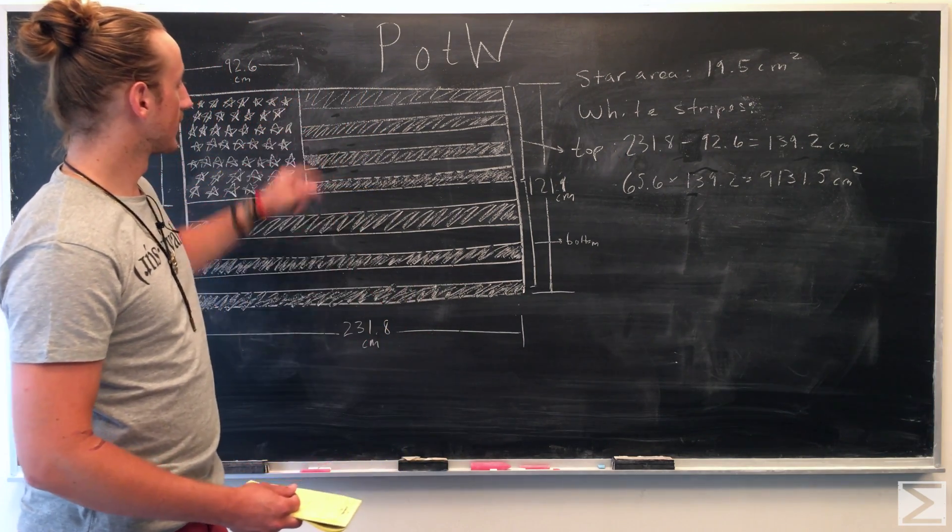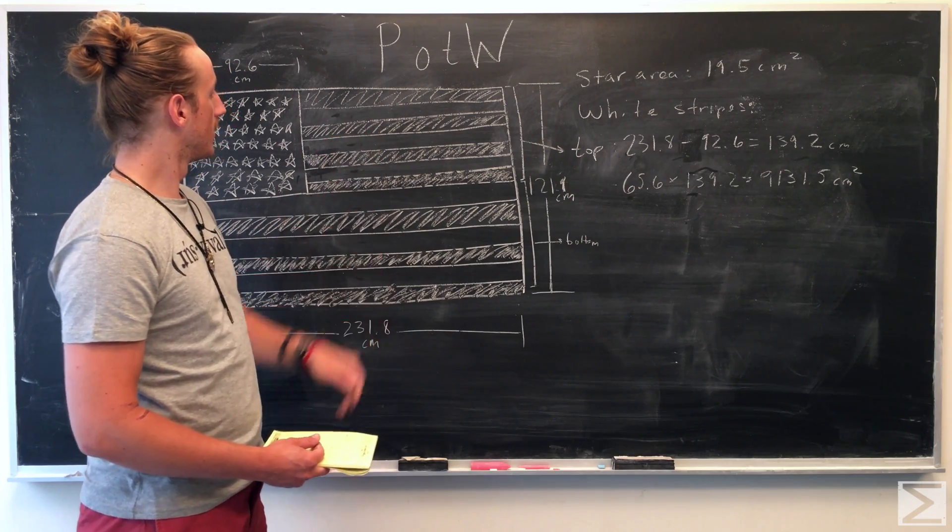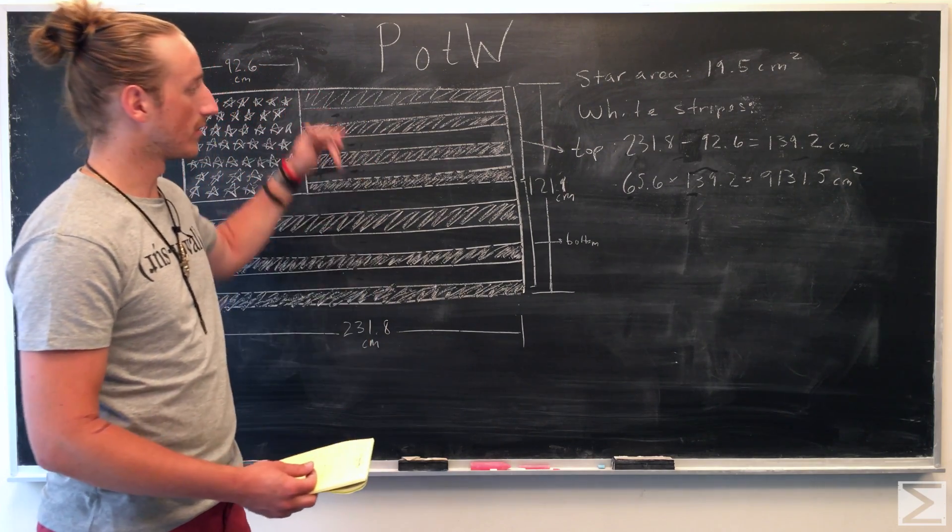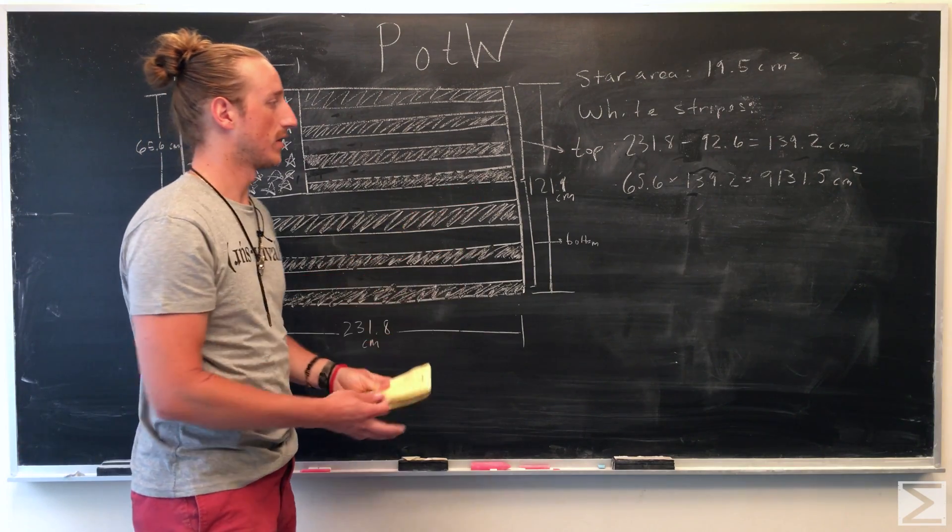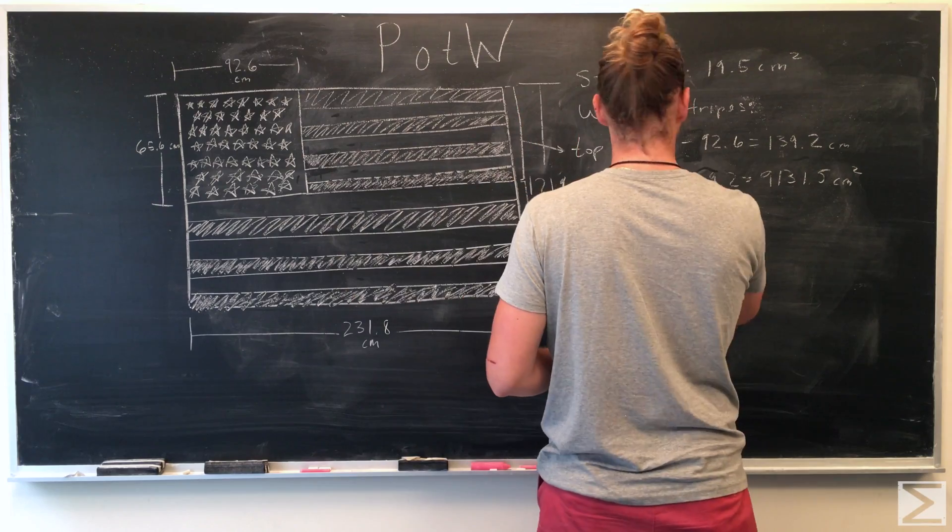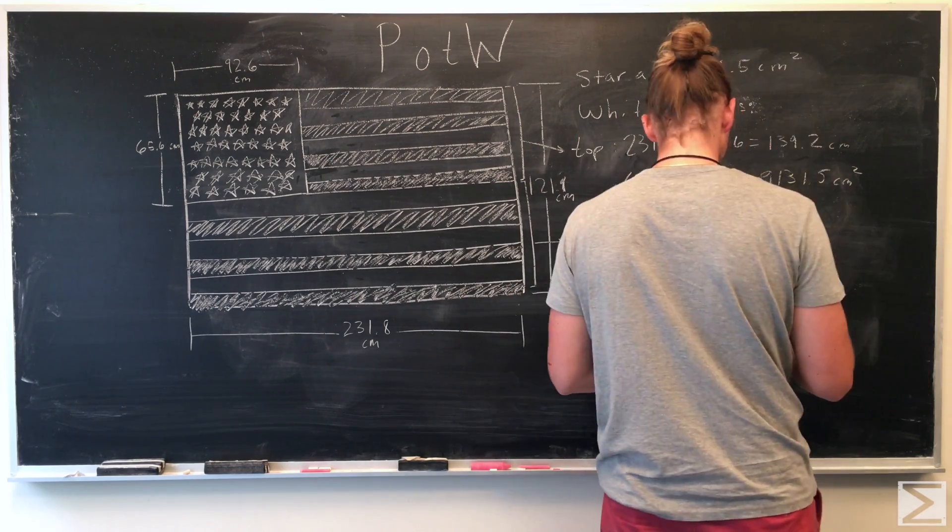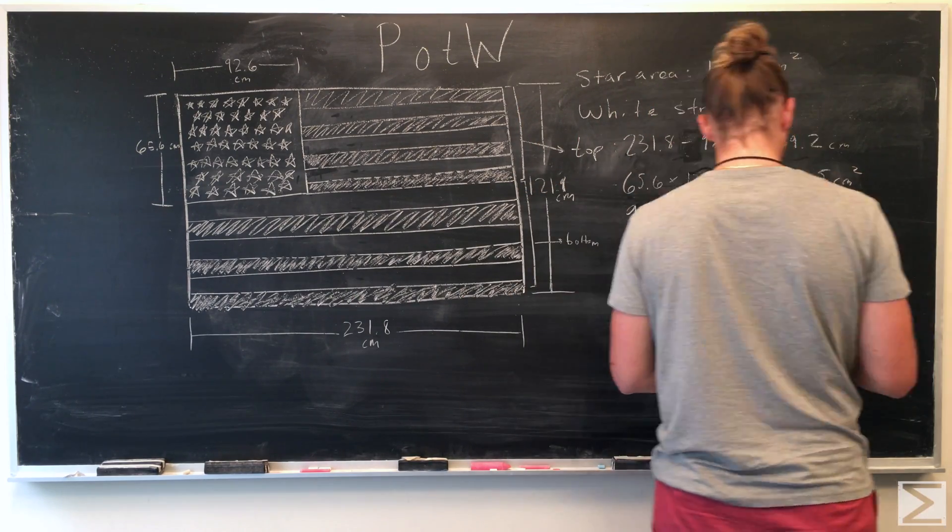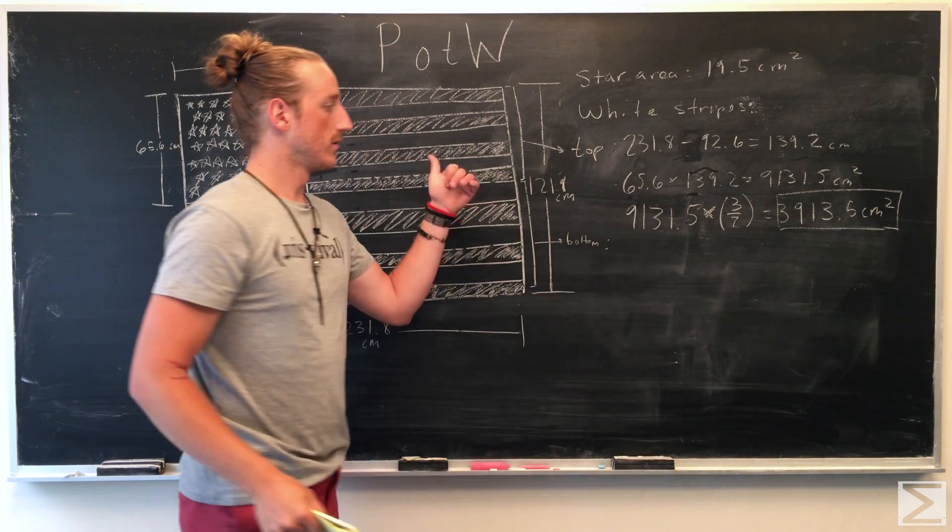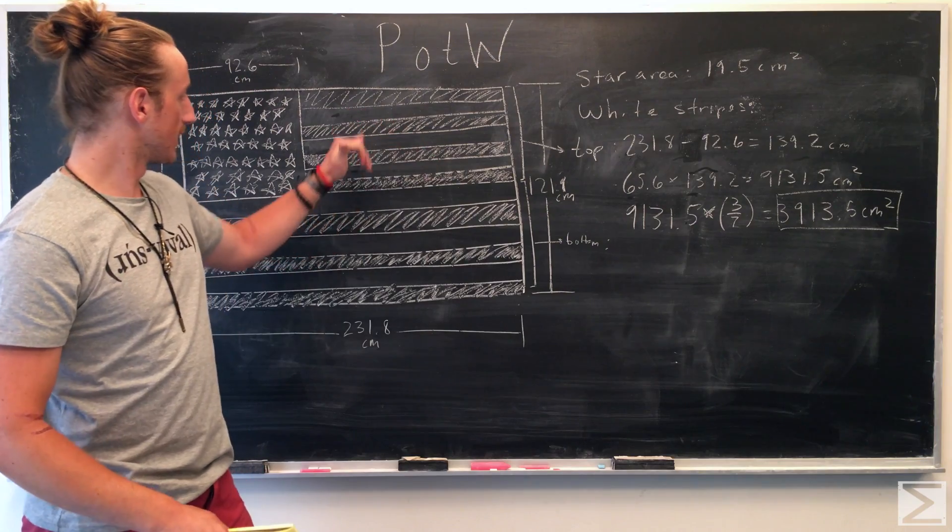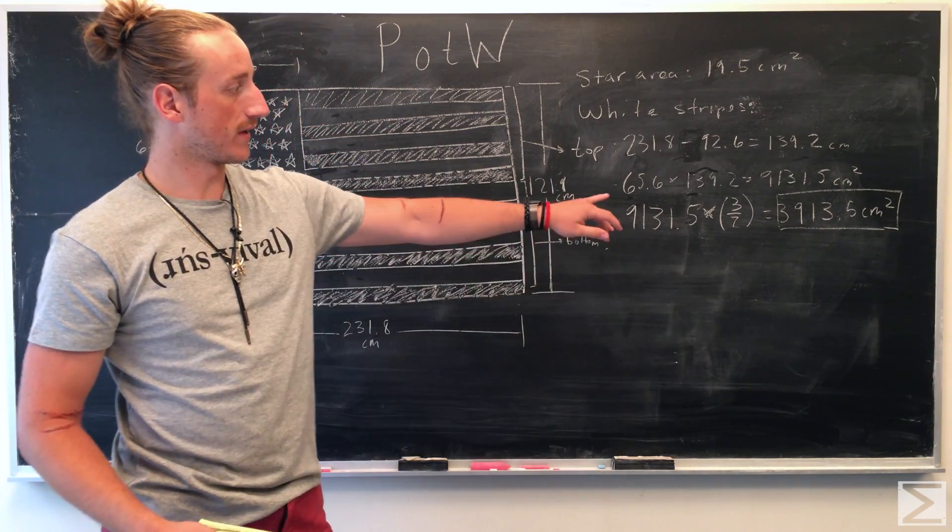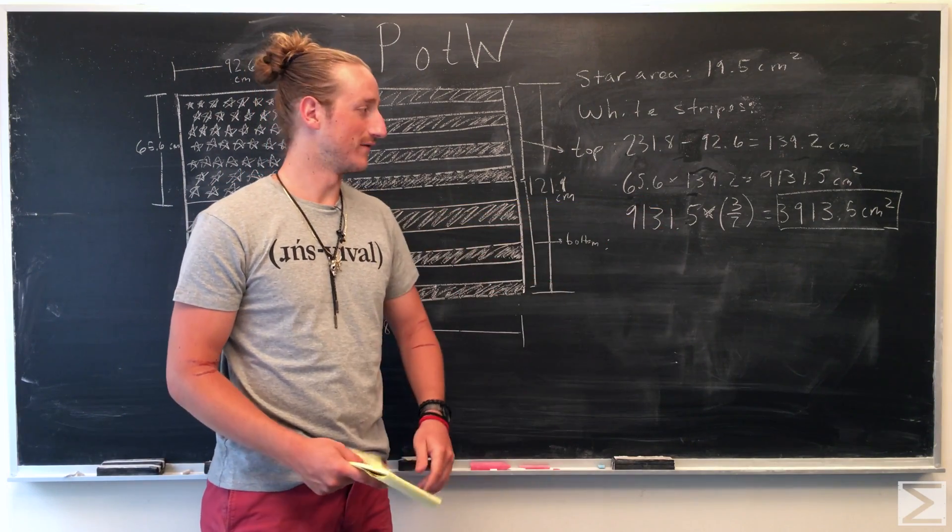We can tell we want three of these white stripes to find the area, but there's seven total. So, we're going to have to multiply this area by 3 sevenths to get the white stripes. We know the top white stripes have an area of 3913.5 centimeters squared.